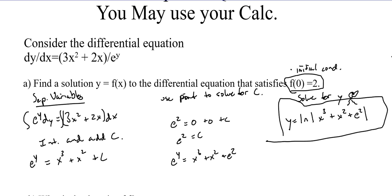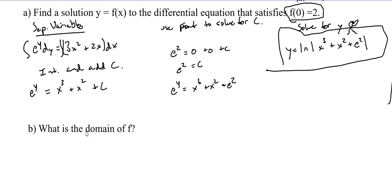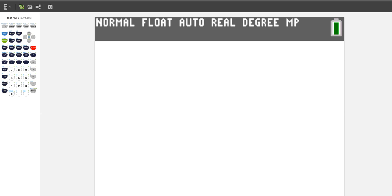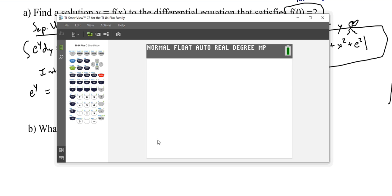Now we're going to expand this — that's what you should know how to do. From this, there are some different problems that we're going to use, and this is where we're going to use your calculator. Take out your calculators. We find our equation: it's going to be the natural log of x cubed plus x squared plus e squared. So take out your calculator and we're going to put this in our y equals.